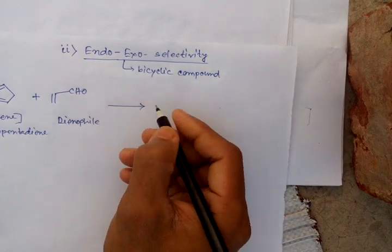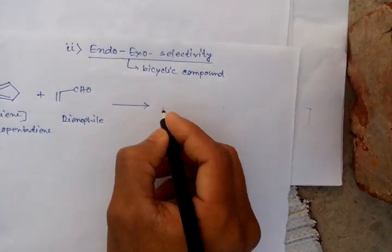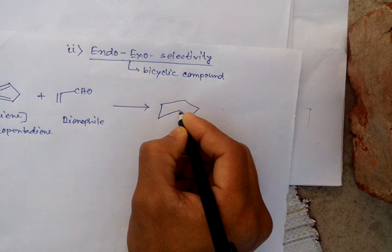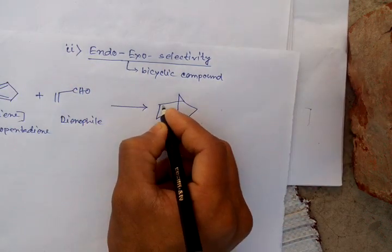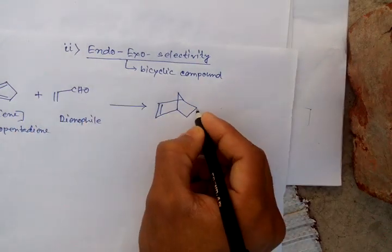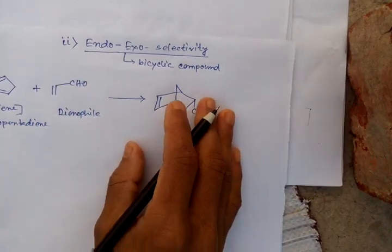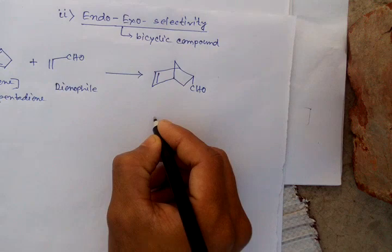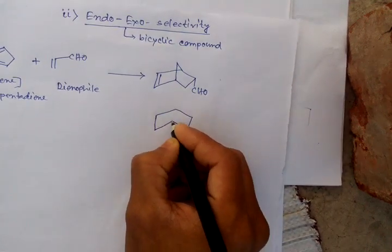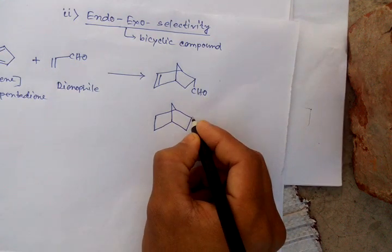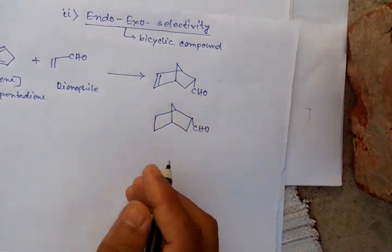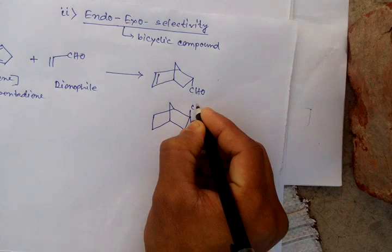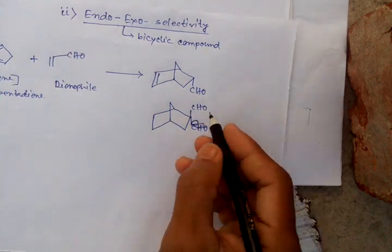And 4 plus 2 cycloaddition undergoes Diels-Alder reaction. The product I get here has a double bond and this CHO bond here. And another one is also possible, here the double here, CHO group, bottom here CHO, top here CHO bottom.